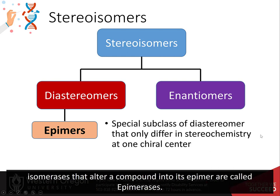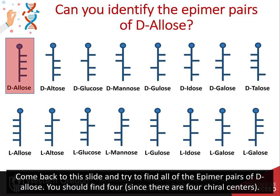Enzymes in the class of isomerases that alter a compound into its epimer are called epimerases. Come back to this slide and try to find all the epimer pairs of D-allose — you should find four, since there are four chiral centers.